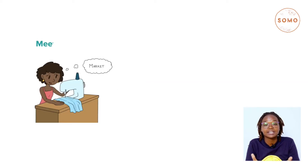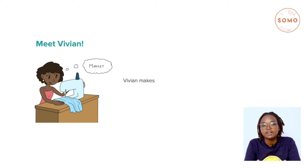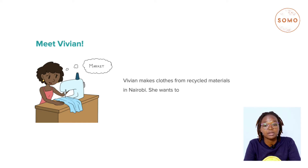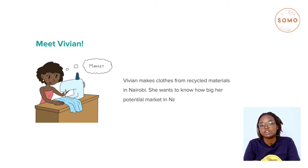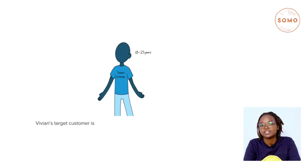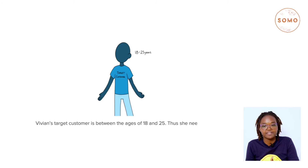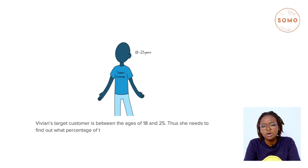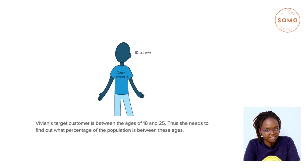We shall understand market size further through the story of Vivian. Vivian makes clothes from recycled materials in Nairobi. She wants to know how big her potential market in Nairobi is. Vivian's target customer is between the ages of 18 to 25. Thus, she needs to find out what percentage of the population is between these ages.